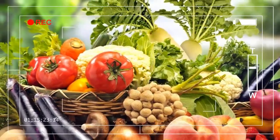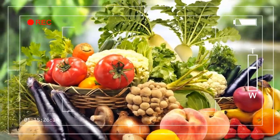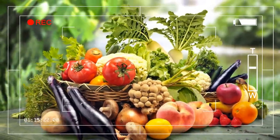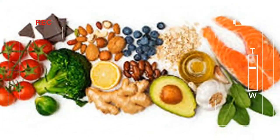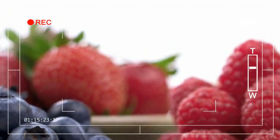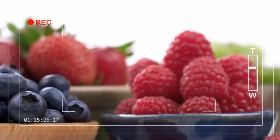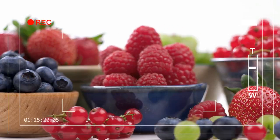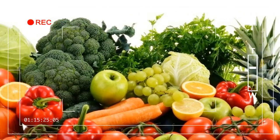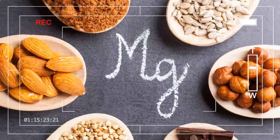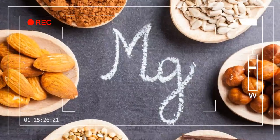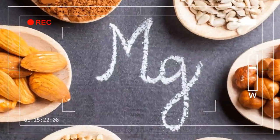Dark chocolate contains a cancer prevention agent called theobromine, which may support the insusceptible framework by shielding the body's bones from free radicals. Free radicals are molecules that the body produces when it separates nourishment or comes into contact with contaminations. Free radicals can harm the body's cells and may add to ailment.